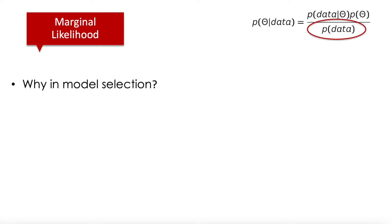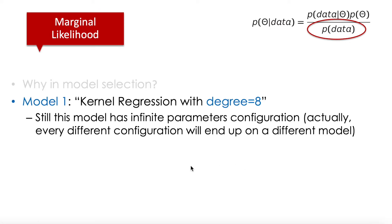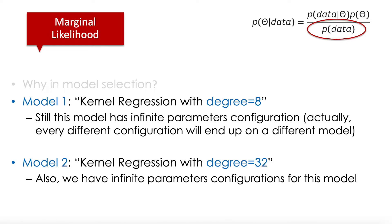So why is the marginal likelihood used for model selection? Imagine we have one model called kernel regression with degree 8. Even though this is just one model, there are infinite parameter configurations, and each different configuration yields a different model. Another model might be kernel regression with degree 32 — also with infinite possible parameter configurations. How do we compare both? How do we decide whether to choose kernel regression with degree 8 or degree 32? It turns out that the marginal likelihood helps us choose between model 1 and model 2.